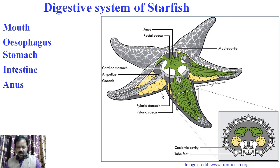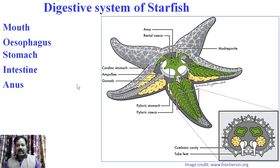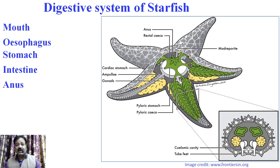The mouth is present on the oral surface, that is the lower surface. The oesophagus is a short, wide, and vertical tube which opens aborally into the stomach. The stomach is a broad sac occupying the inner portion of the central disc. It is divided into two parts: the cardiac stomach and the pyloric stomach. The pyloric stomach ends into leaf-like structures called pyloric caeca, which are glandular structures.